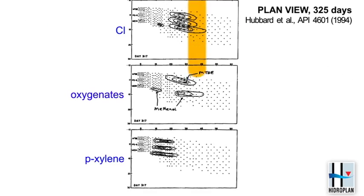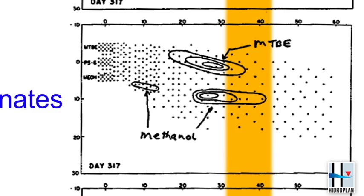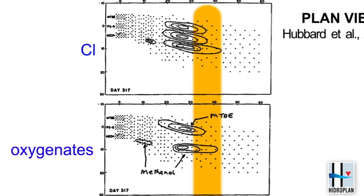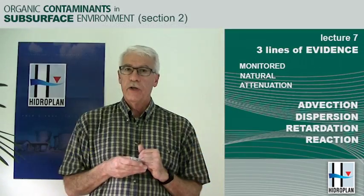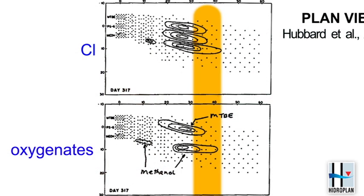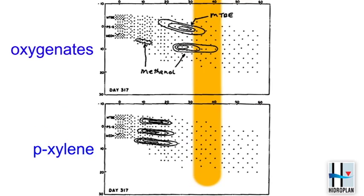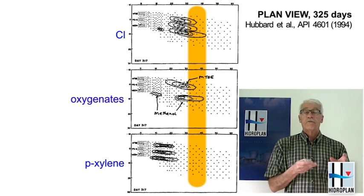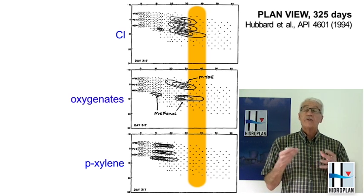If we compare the location of the oxygenates — MTBE and ethanol — with that of chloride on day 325, you can see that MTBE is in about the same position as the chloride. The methanol has separated into two distinct masses. On average the methanol looks like it's moving about as quickly as the chloride. However, one of the hydrocarbons, para-xylene, is also shown, and you can see that the slug of para-xylene has advanced far less than the slug of chloride. That's retardation — para-xylene is undergoing advection, dispersion, and retardation, and it's moving at about 60% of the groundwater velocity.